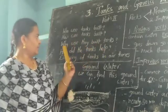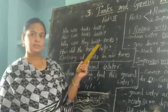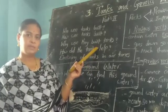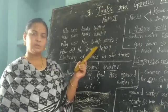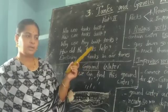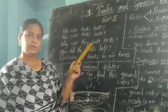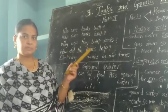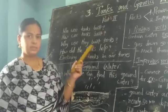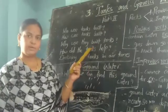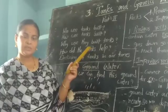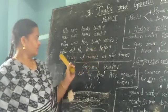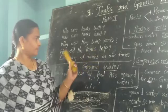Why were tanks built? In olden days, tanks were built for controlling the speed of rain water, to stop the running rain water, and for drinking purposes. The tanks provided drinking water to both animals and human beings.